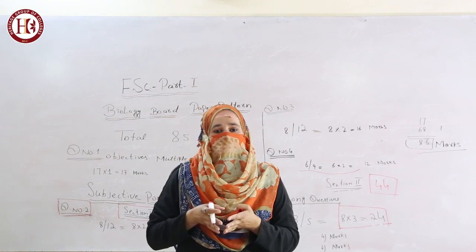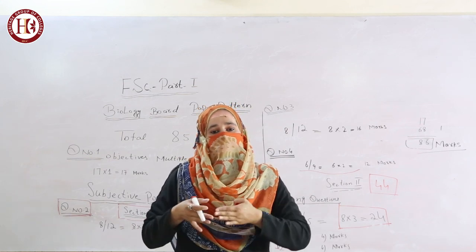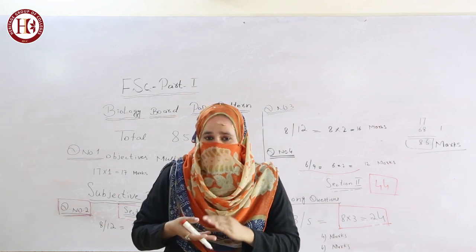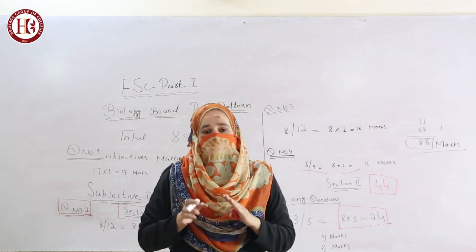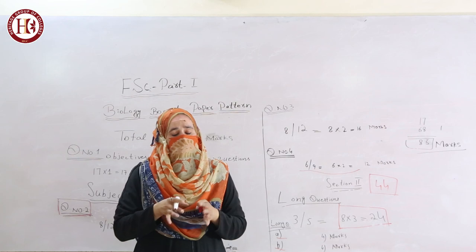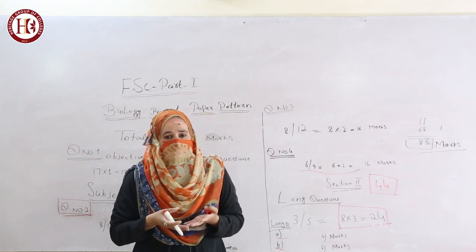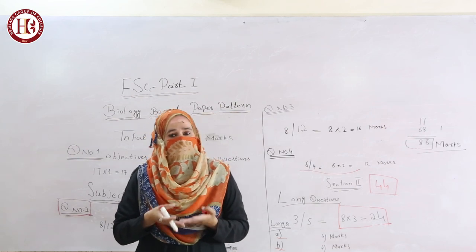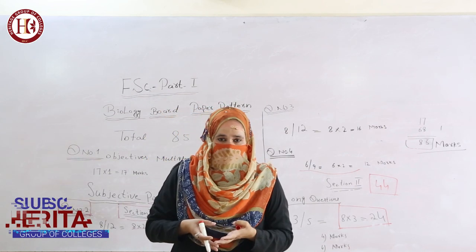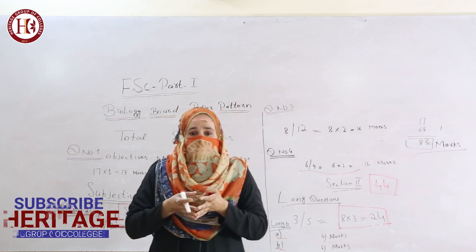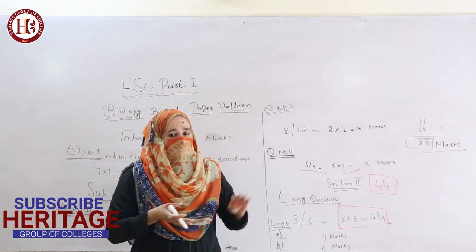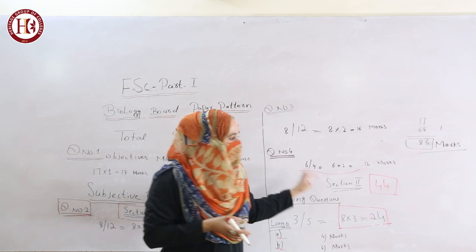After that, you have Question No. 4. Question No. 4 has 9 short questions, out of which you have to attempt any 6. It consists of 12 marks. Section No. 1, the first deviance, collectively consists of 44 marks.